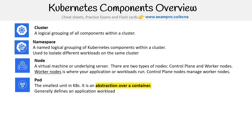Then you have pods. Pods are the smallest unit in Kubernetes — an abstraction over containers that generally defines the application workload. Basically, lots of these components are just pods, and you'll see that again and again when we list pods using kubectl to show what's running under a namespace. They're always pods.